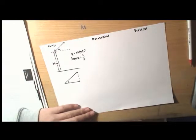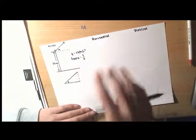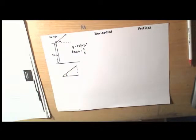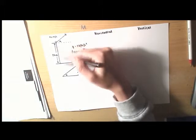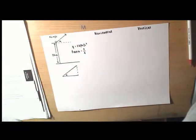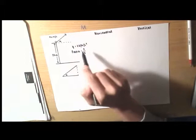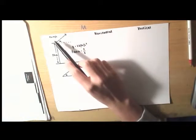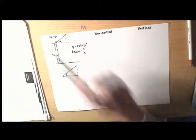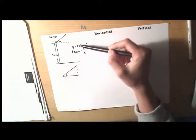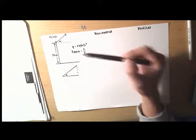The question says that an object is projected from the top of a vertical cliff 25 meters above the horizontal ground at an angle alpha where tan alpha equals 3 on 4, with an initial speed of 40 meters per second. It tells us to take g as 10 meters per second squared.